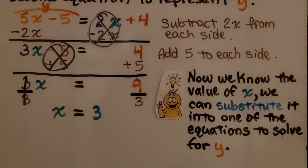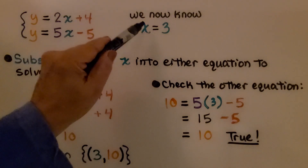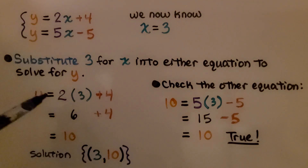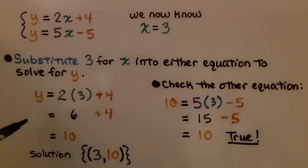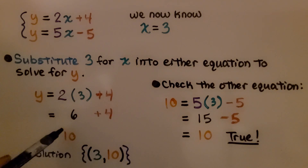Now that we know the value of x, we can substitute it into one of the equations to solve for y. We substitute 3 for x into the first equation. Instead of 2x, we have 2 times 3. So y equals 2 times 3 plus 4, which means y equals 6 plus 4, which equals 10. We know x is 3 and y is 10.